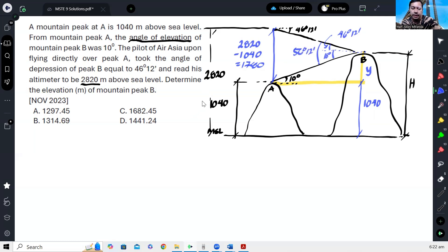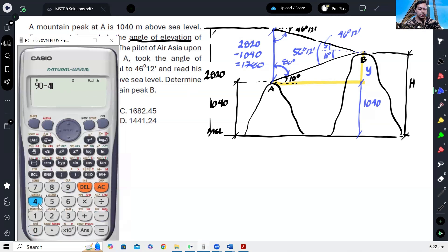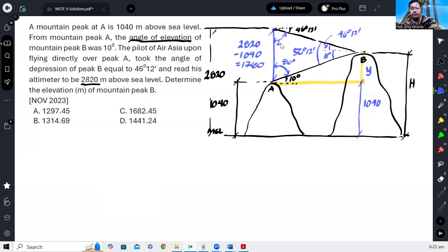And then we can calculate this angle, since it is the complement of 10, this will be 90 minus 10, which is 80 degrees. And similarly, the complement of 46 degrees 12 minutes is 90 minus 46 degrees 12 minutes, which gives us 43 degrees 48 minutes.